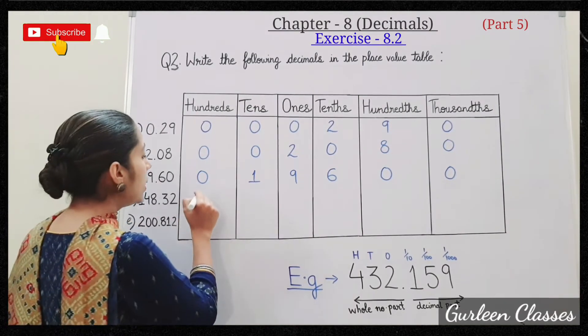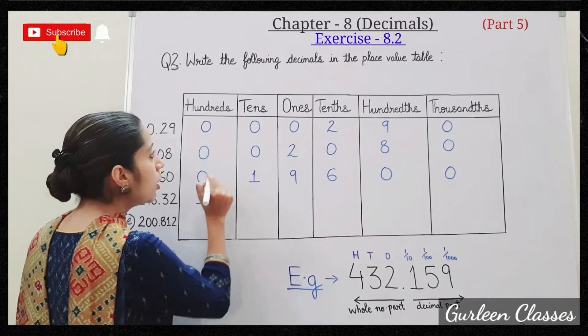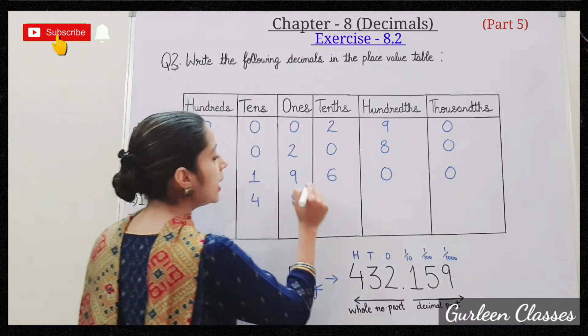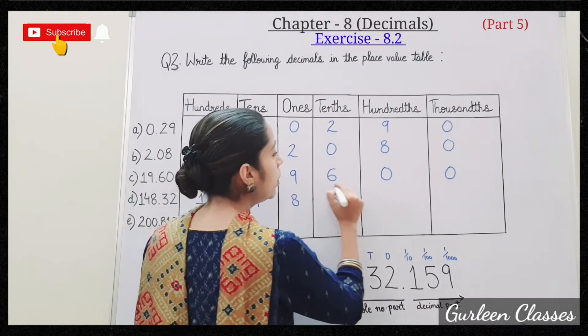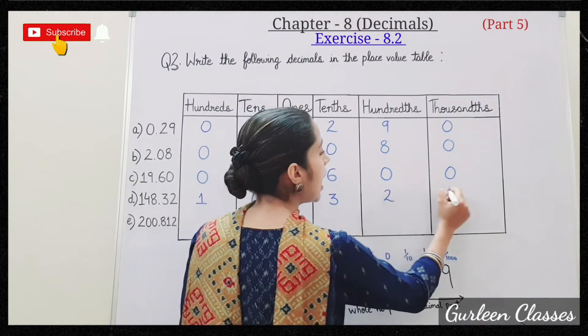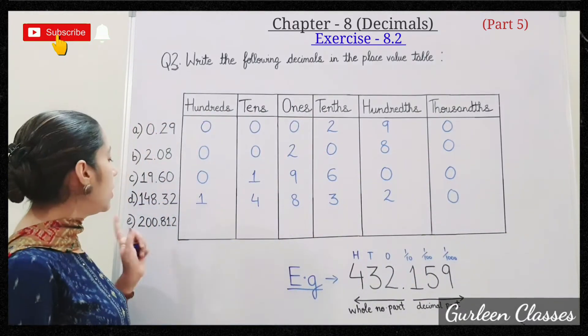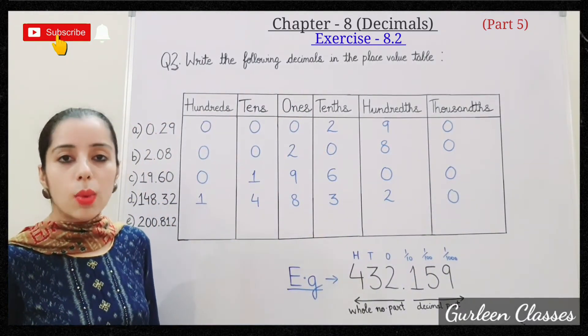D: 148.30. So 1 is at hundreds place, 4 at tens place, 8 at ones place, 3 is at tenths place, 0 at hundredths place and 0 at thousandths place.